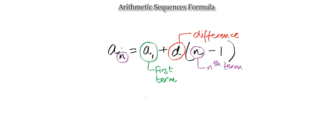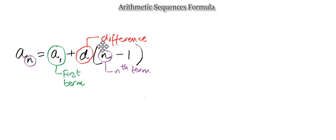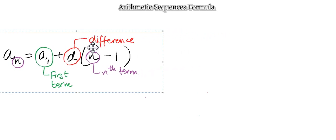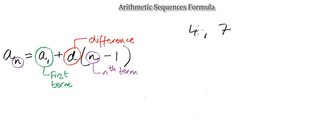So that's the formula and every single letter holds an identity. Let's set that aside so we can practice a question. For our example, consider the sequence: four, seven, ten, and thirteen. Looking at the difference between consecutive terms, that's plus three each time.